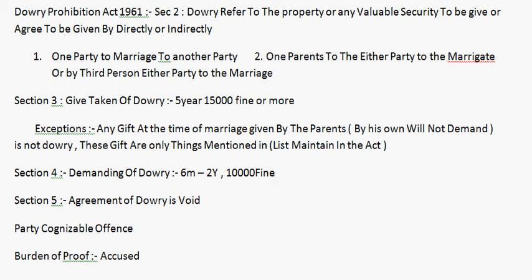Directly or indirectly — us ko dhej kehte hain. Dhej koi bhi property ho sakti hai, like car ho, gadi ho, property ho, land ho, uske papers ho, paise ho. Yeh sab Dowry Prohibition Act mein aate hain. Dowry directly ya indirectly ho sakti hai.